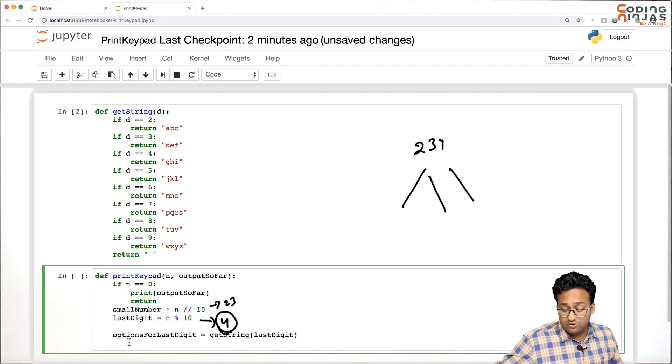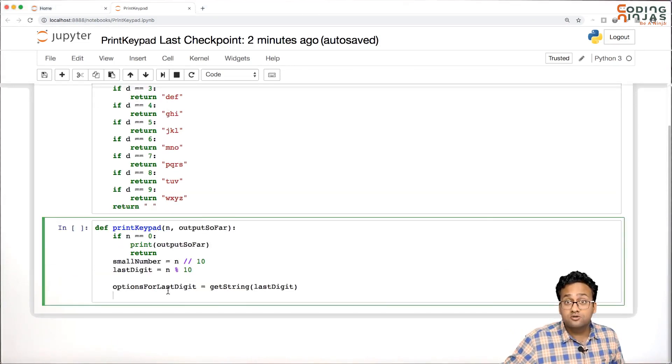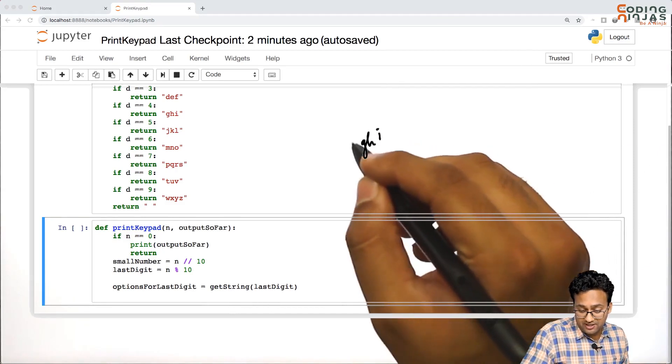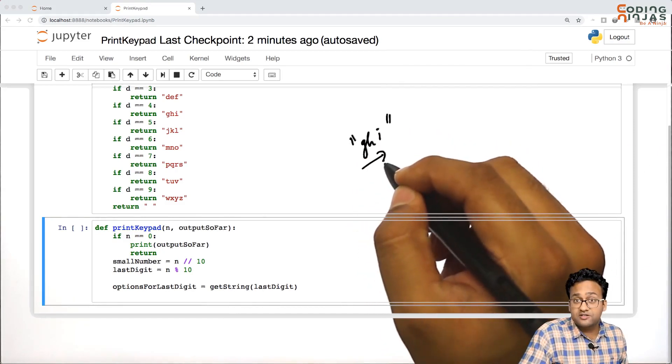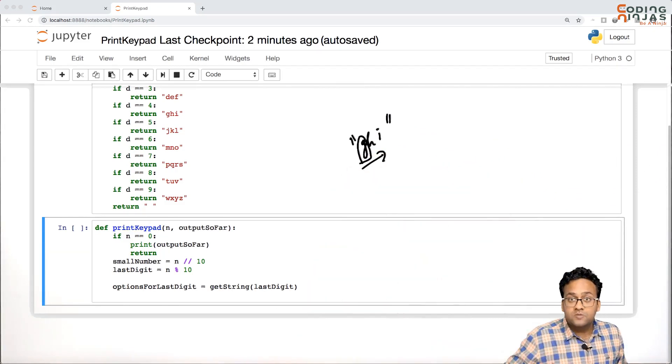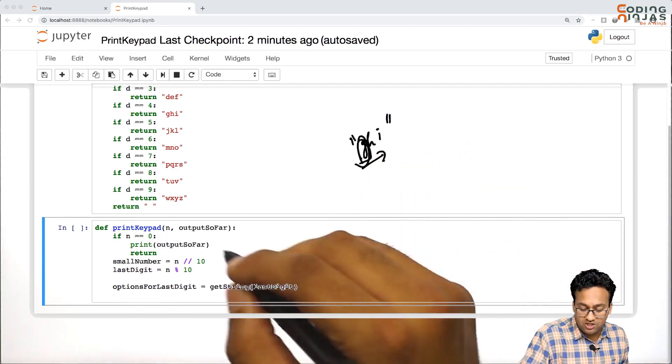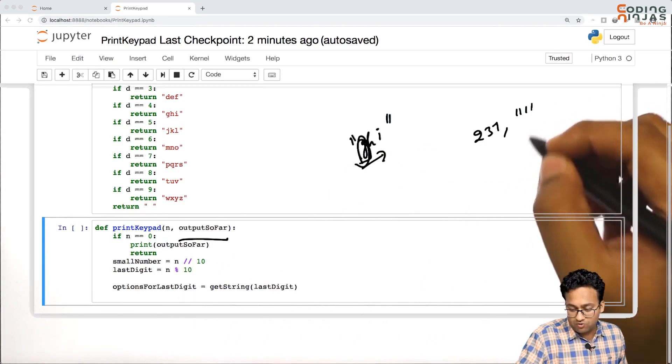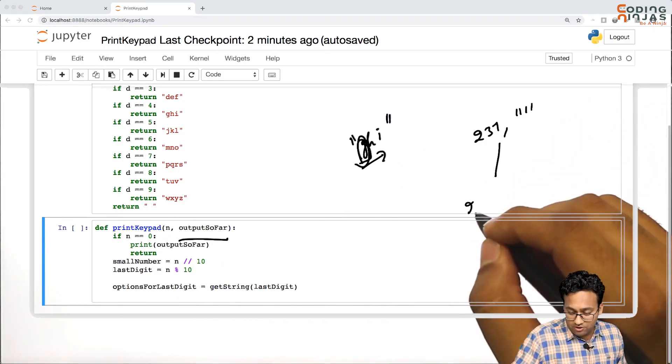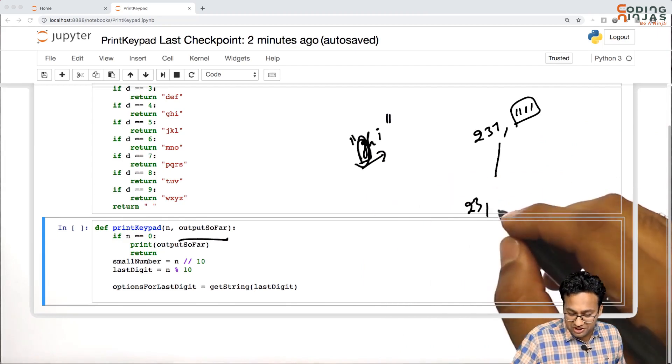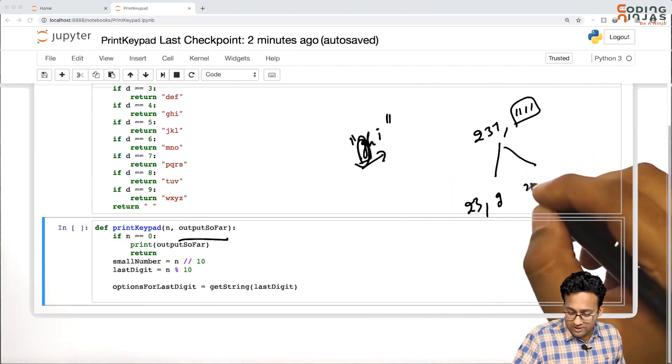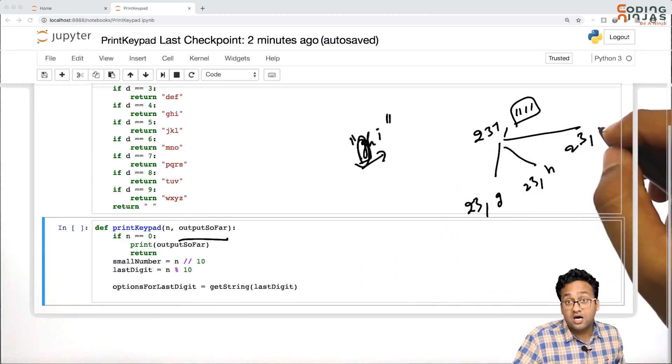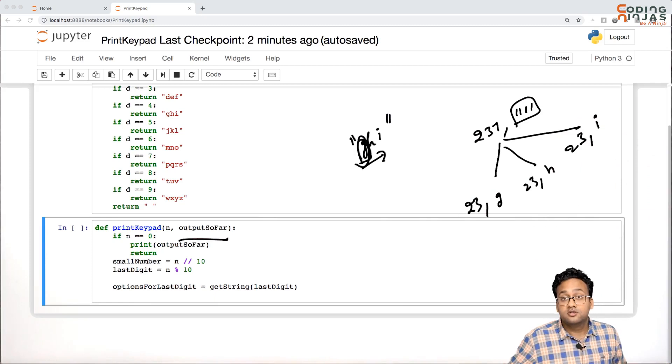Now, if last digit options, let's say, are 'ghi', you need to go through this string, first pick up this one and call recursion by appending this to the output so far. So this was 234, you had empty output so far. We'll call on 23 and append g, then append h, then append i. That's what you need to do.